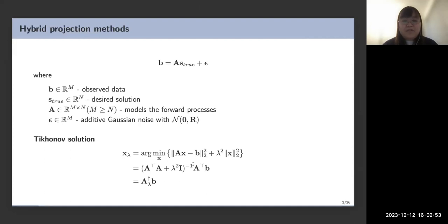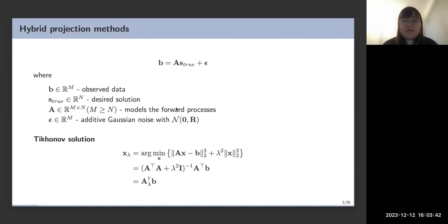I will give a brief background introduction of the hybrid projection method. This method focuses on solving the linear inverse problem, where B is observed data, A is a very large-scale forward model matrix, and x_true is the desired solution we want to reconstruct. For a high-resolution image like 1024 by 1024, if we vectorize it, the size of A is over a million by over a million — too large to invert or decompose. The only feasible operation is matrix-vector multiplication.